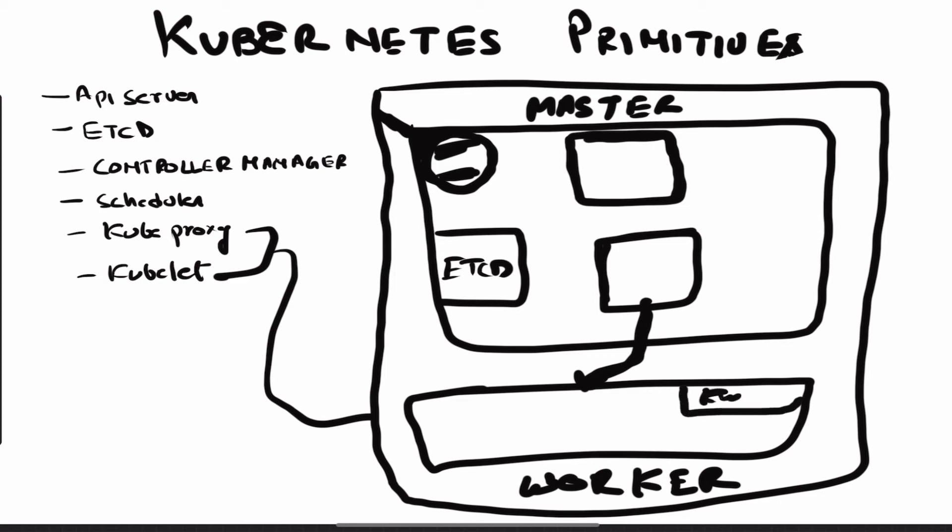Kubelet is a process running on your worker node. You can think of kubelet as the captain of a ship — everything happening on the worker node is managed by it. The API server talks to the kubelet whenever it needs to. For example, if I want to deploy a container, I tell the API server, and the API server then talks to kubelet on the worker node to tell it to deploy the container on that particular node.